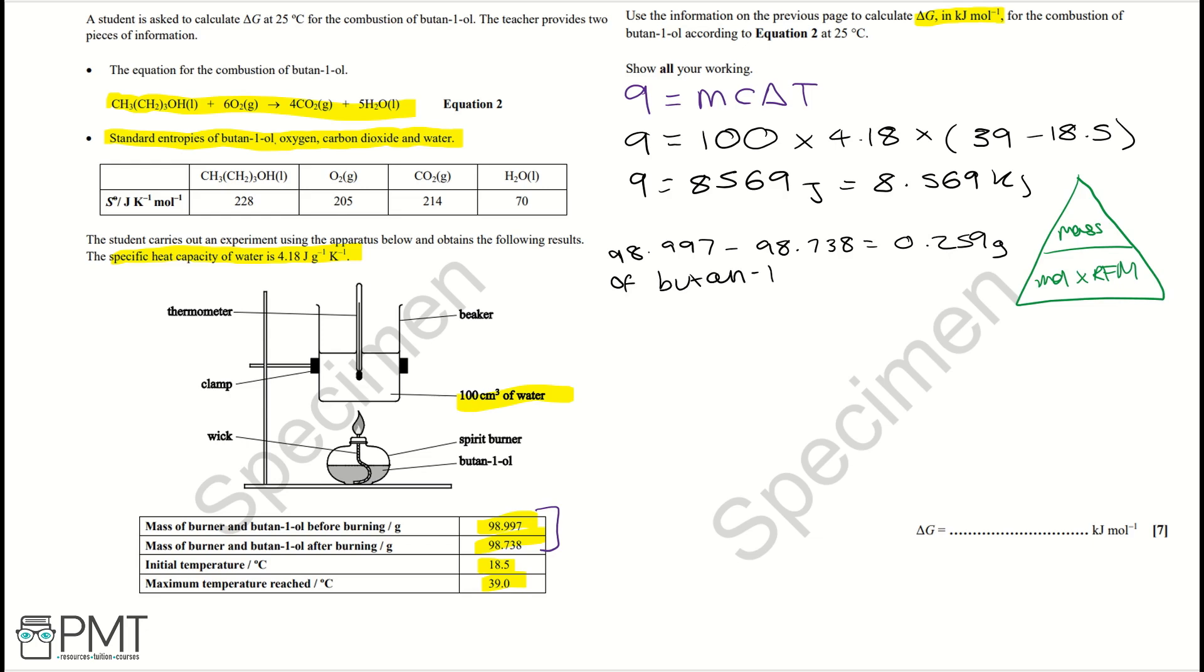And then we're going to work out the relative formula mass of butan-1-ol, which is going to be 12 times 4, plus 10, plus 16, which is equal to 74 grams per mole. And then using the equation triangle, we can do 0.259 divided by 74, and that is equal to 3.5 times 10 to the negative 3 moles of butan-1-ol, which we can then use later on in the question.